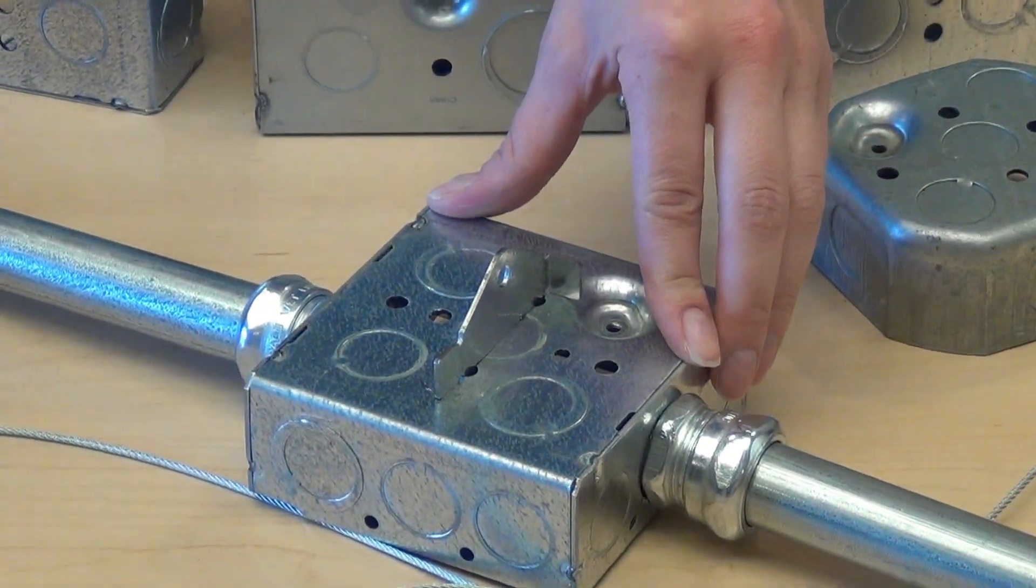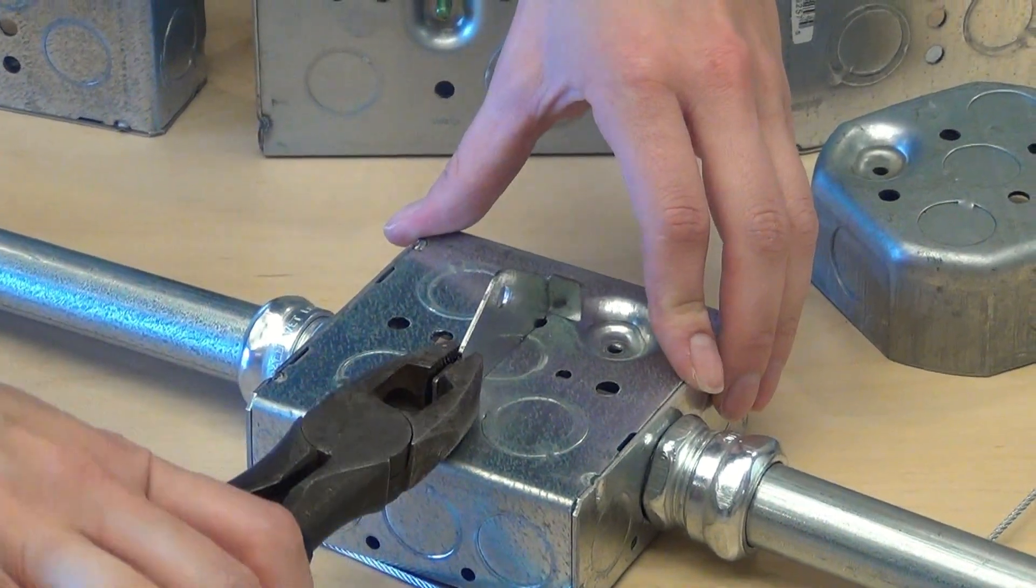The second step is to lock the support into position by bending this tab back 90 degrees.